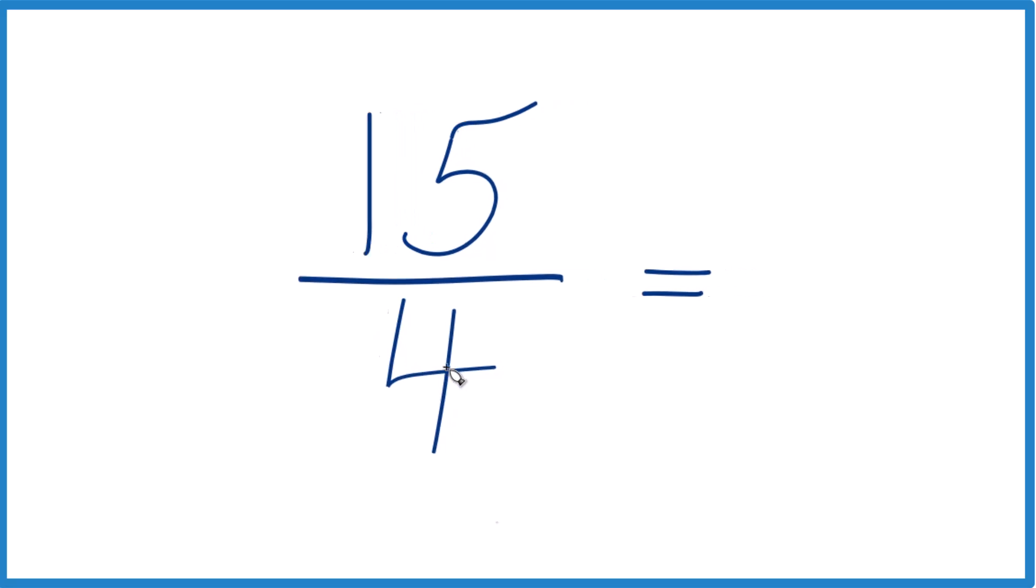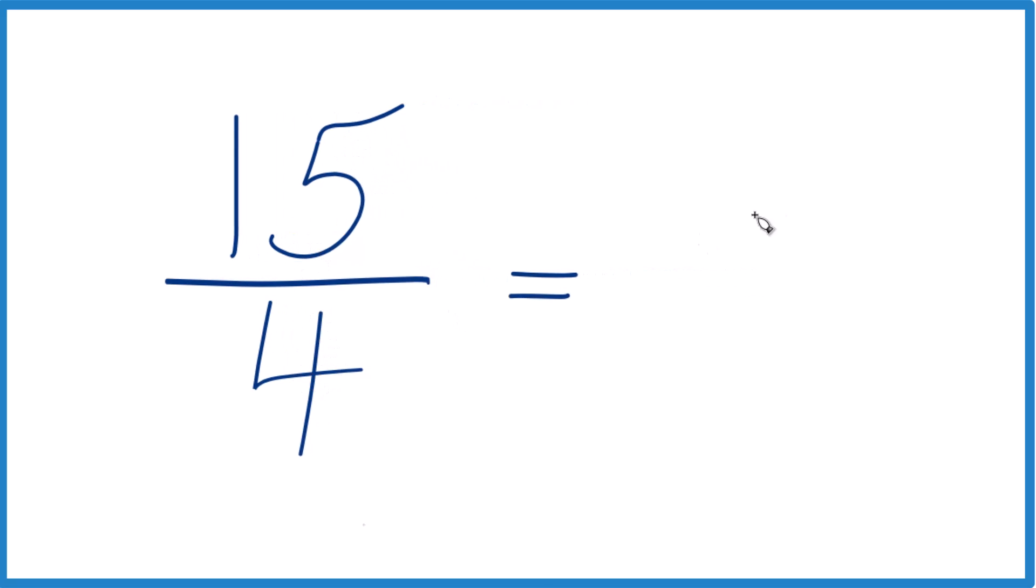Let's see, 4 goes into 15 three times. 3 times 4 would be 12, and then we'd have 3 left over, bring the 4 across, and we end up with 3 and 3 fourths.